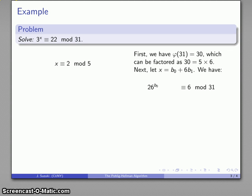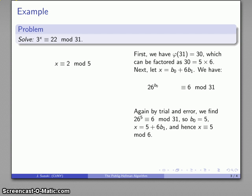And so I now know that 26 to the b₀ I don't know what that is. But by trial and error, I can figure out that this exponent has to be 5. And so I know that x is going to be congruent to 5 mod 6.